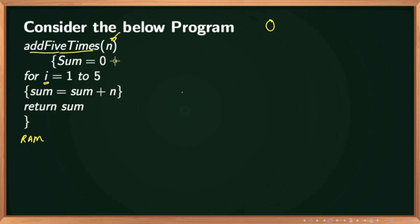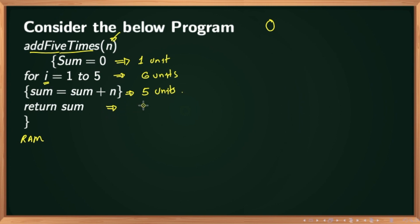In this program, the first instruction sum equals 0 takes 1 unit of time. This for loop takes 6 units of time because the for loop runs from i equal to 0 to 5, and then the value of i becomes 6 and is greater than 5, so the instruction takes 6 units of time. The instruction sum = sum + n is inside the for loop, so it takes 5 units. The last instruction return sum is executed only once and takes 1 unit of time. Adding all these values gives us 13 units. The running time of this program is 13 units, which is independent of the input argument n.